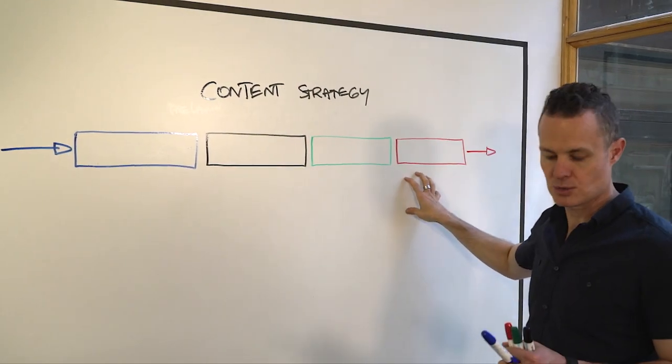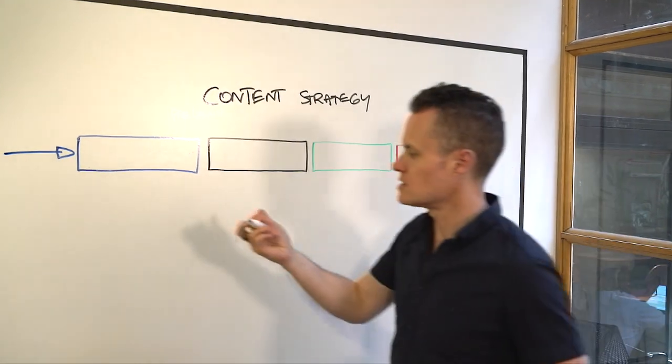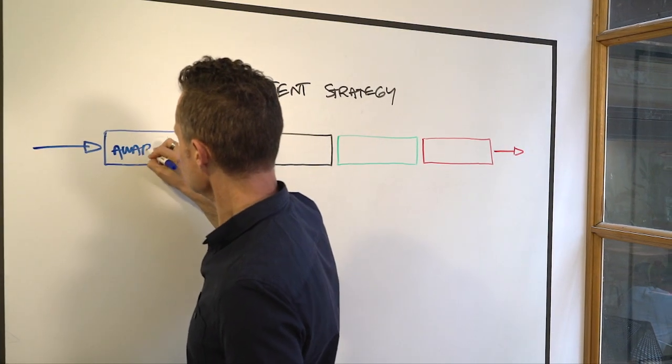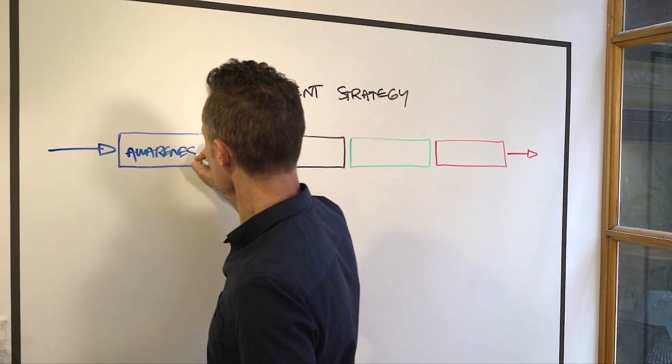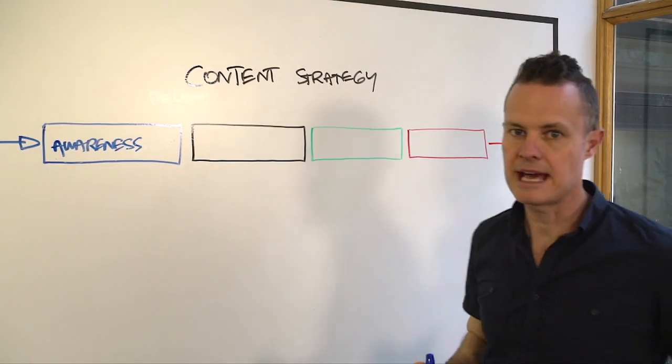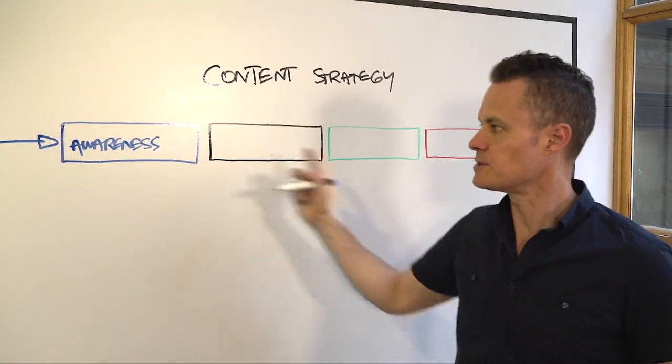It all starts with an awareness campaign. The content strategy blueprint that Dana taught me is broken down into these four campaigns. It all starts with awareness where we basically make them aware of the problem, because before this they're unaware.